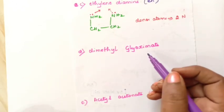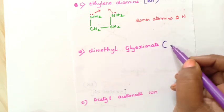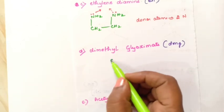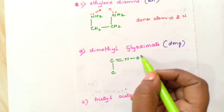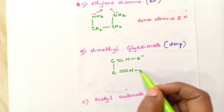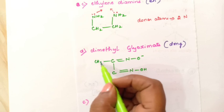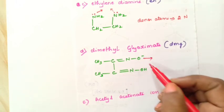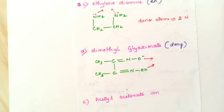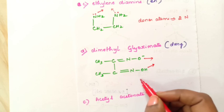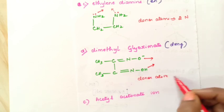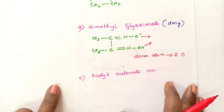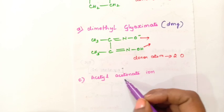Next is dimethylglyoximate, short form DMG. The structure is C-C double bond N, O minus, double bond N, OH, CH3 and CH3. Through one oxygen atom one coordinate bond and through the other oxygen atom one coordinate bond. Donor atoms are two oxygen atoms, so this is also an example of a bidentate ligand.